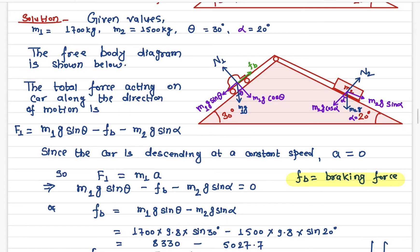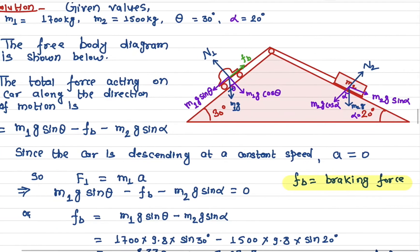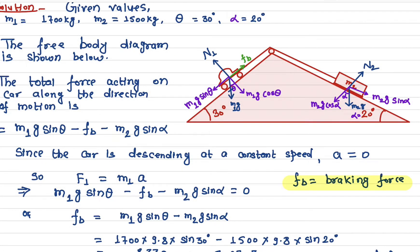What are the total forces acting onto the car along the direction of the inclined plane? The first force is m1g sine theta, acting downward along the slope. The second force is Fb, the braking force. There is an additional force from the connected mass — the car is connected to the mass by a rope, and along this direction the force is m2g sine alpha.